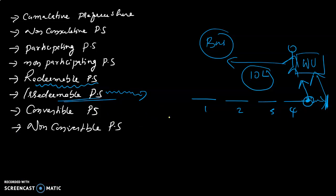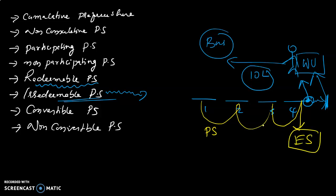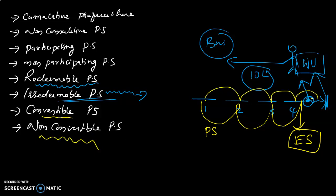Then, convertible and non-convertible preference shares. In a convertible preference share, the preference share can be converted into equity shares after a certain number of years. In a non-convertible preference share, there is no conversion — it will be continued as a preference share as it is. That is the meaning of this type.